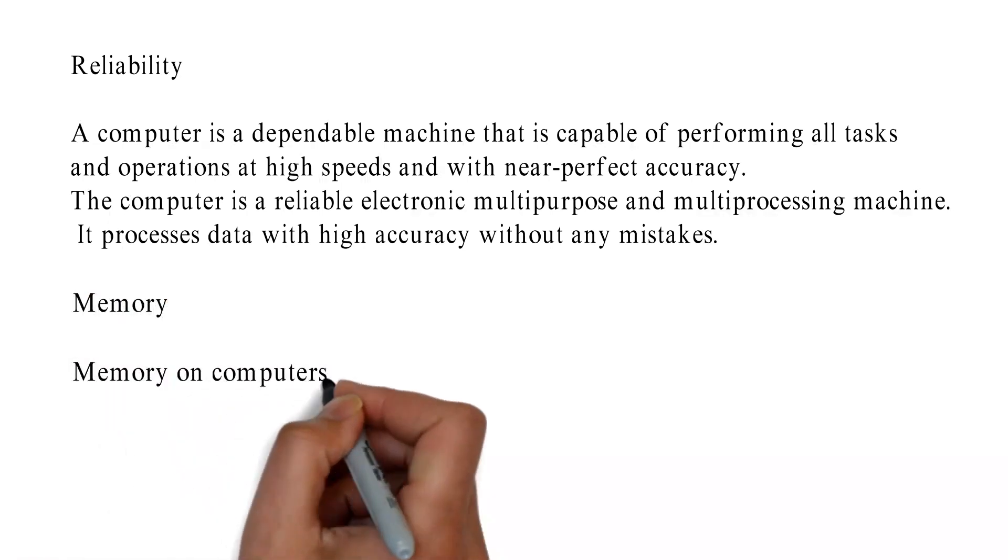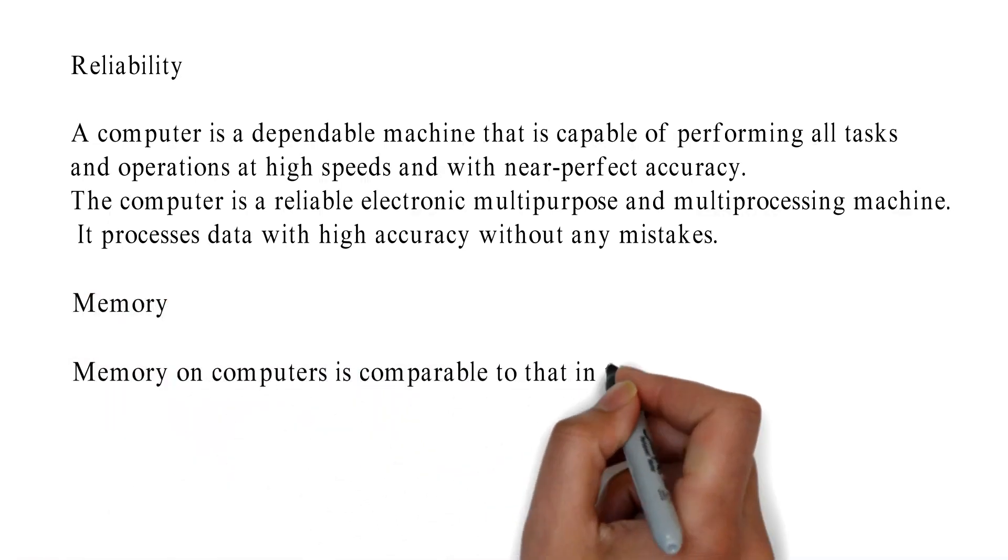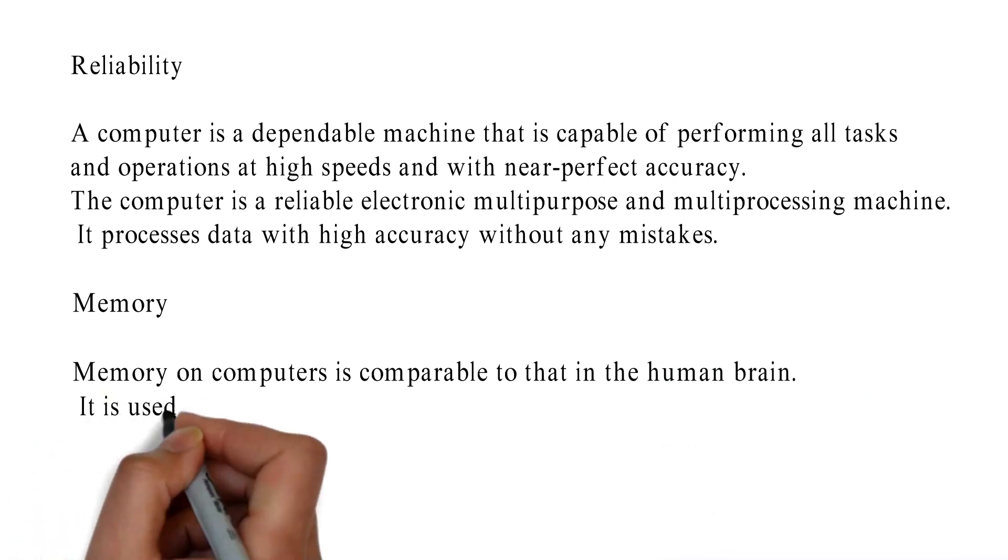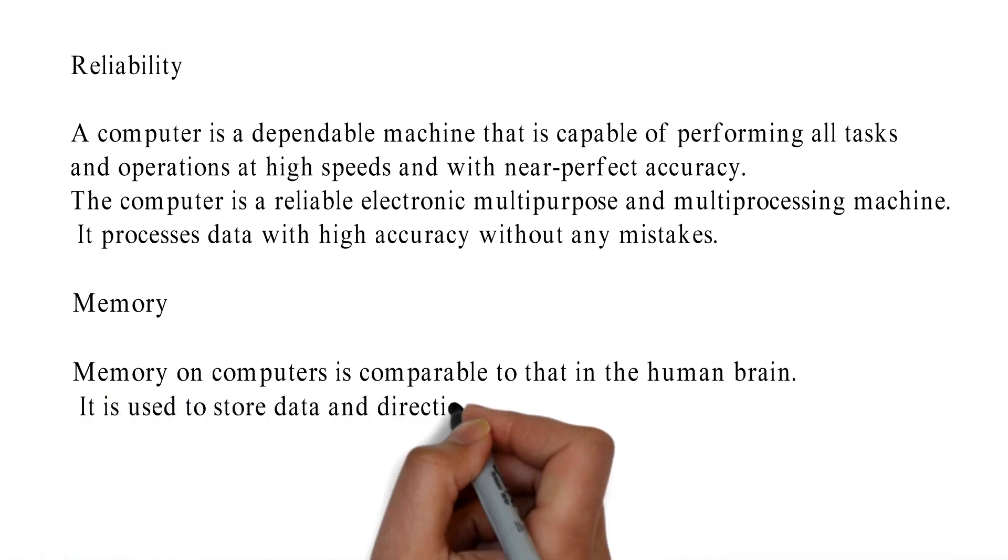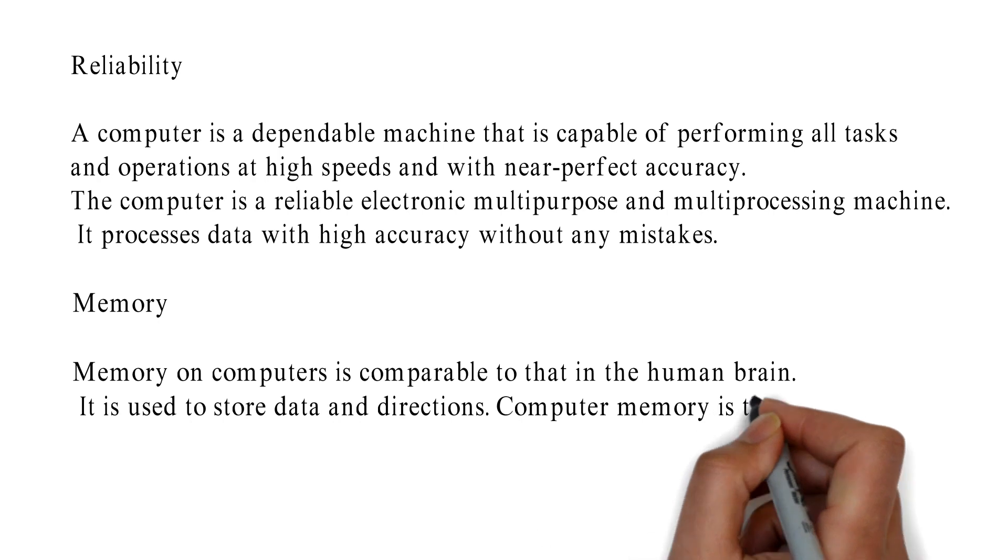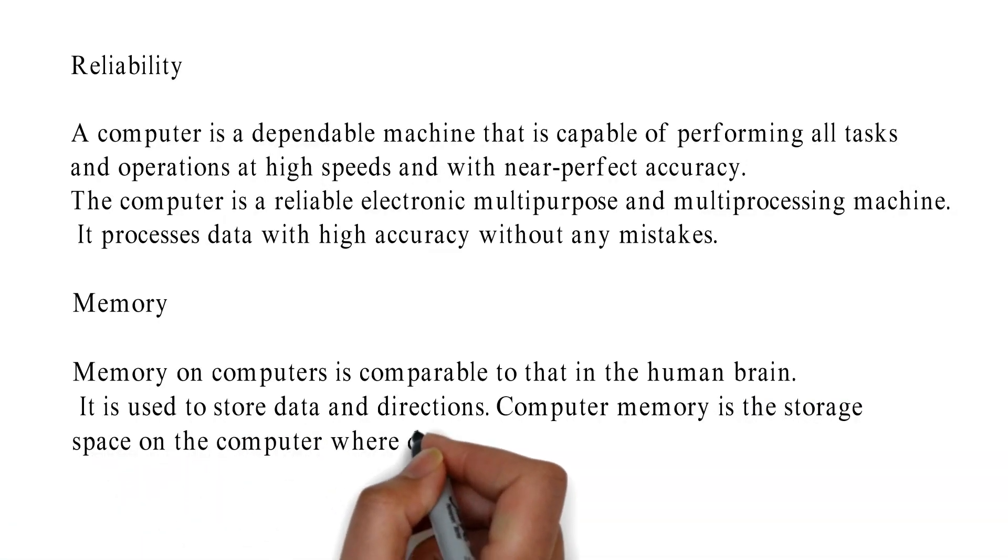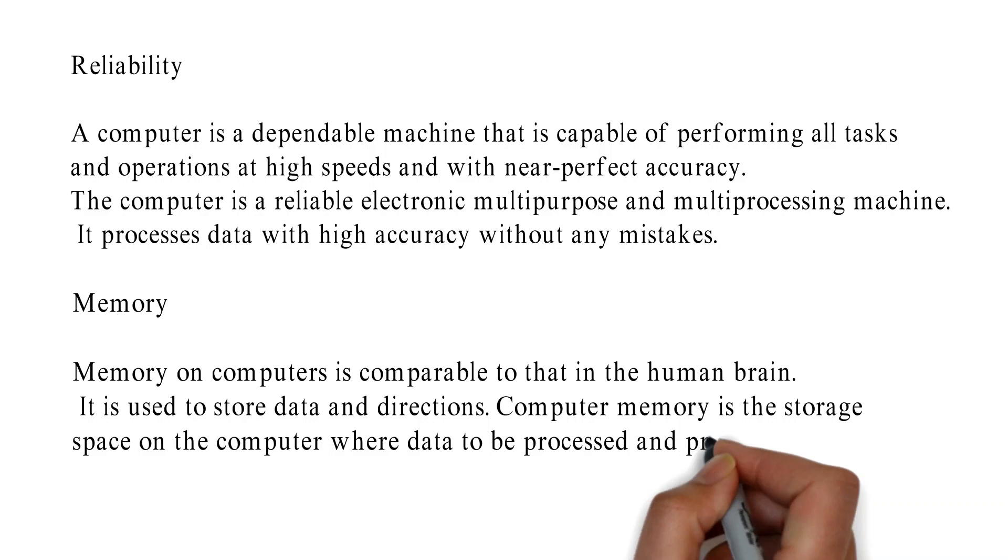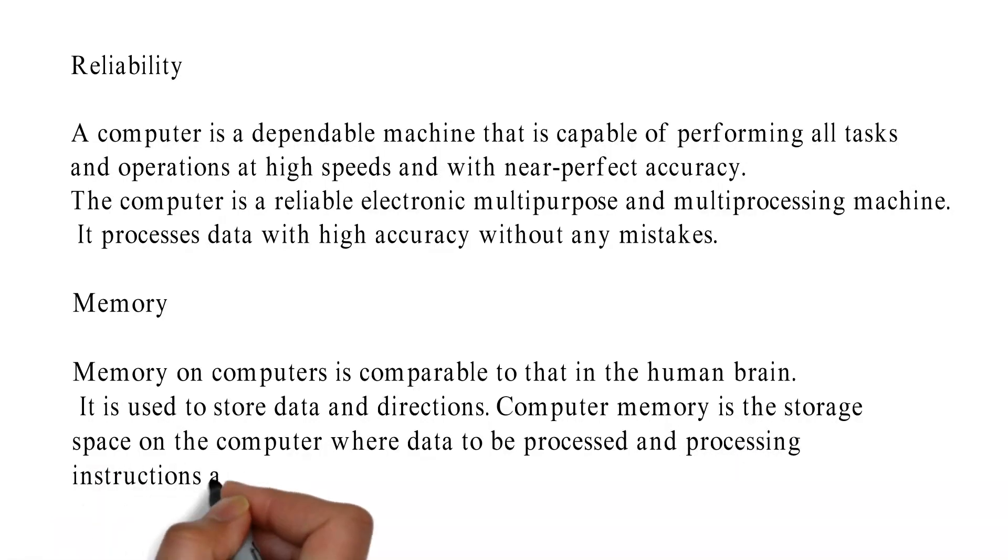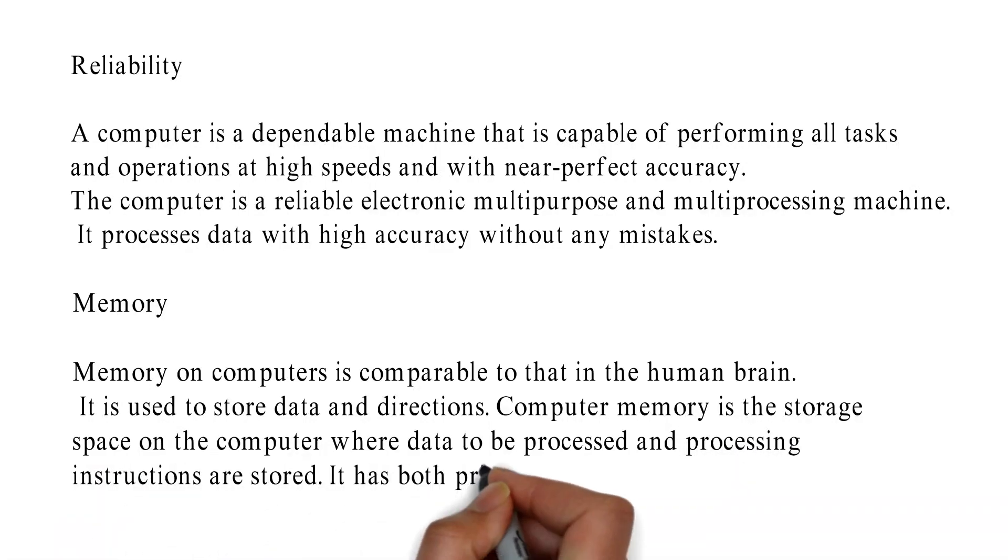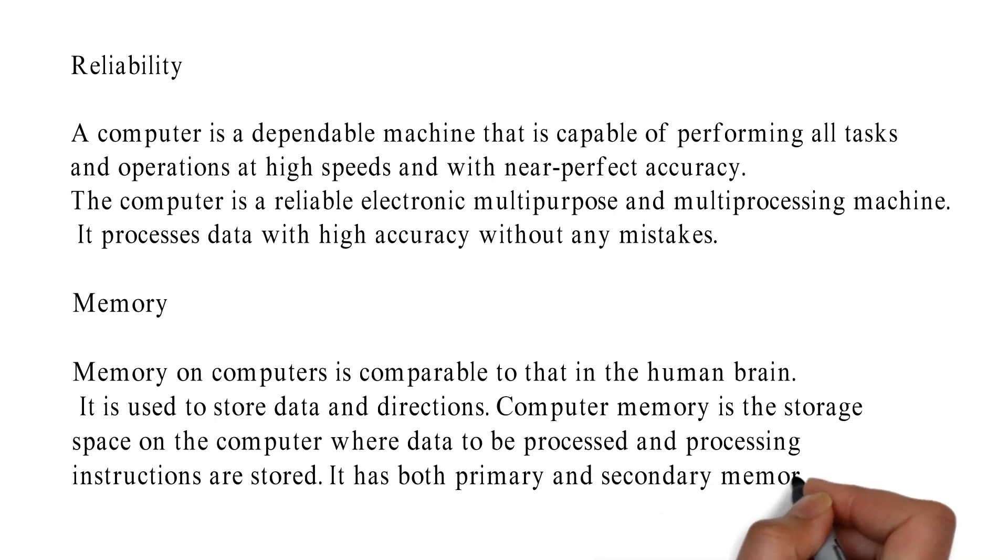Memory: Memory on computers is comparable to that in the human brain. It is used to store data and directions. Computer memory is the storage space on the computer where data to be processed and processing instructions are stored. It has both primary and secondary memories. Computer has a very large storage capacity.